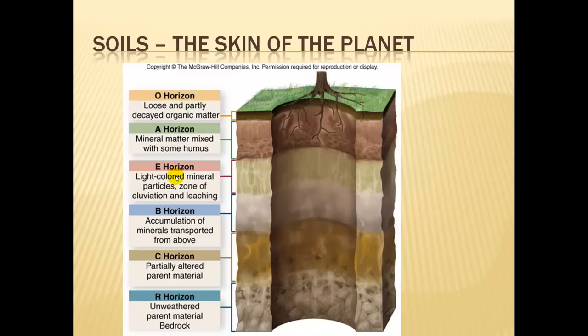That organic matter has a lot of nutrients in it that plants like to feed off of. The E horizon is a horizon that's not always present in all environments. When you think of an E horizon, you want to think of a soil that's sandy, oftentimes in a cool, moist climate. If you're from areas of northern Wisconsin or northern Minnesota with sandy soils, you might have seen an E horizon, because this is definitely a northern forest soil.